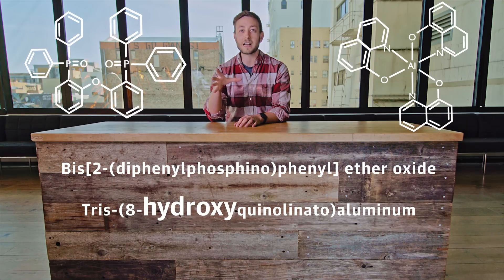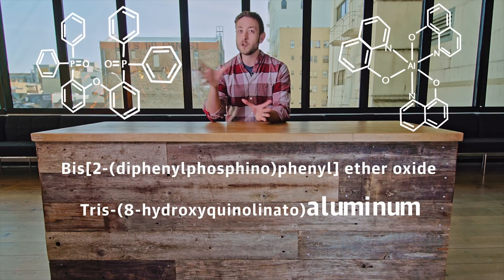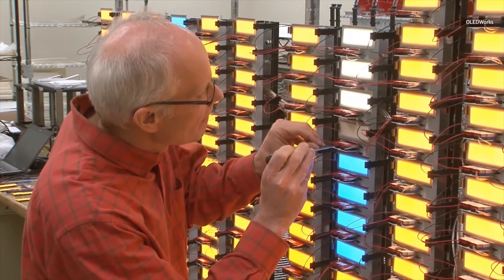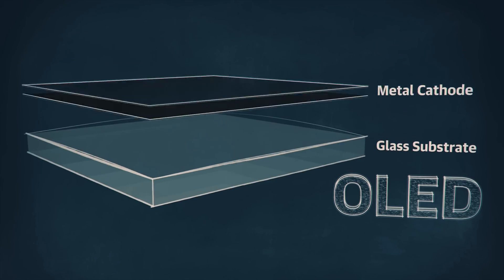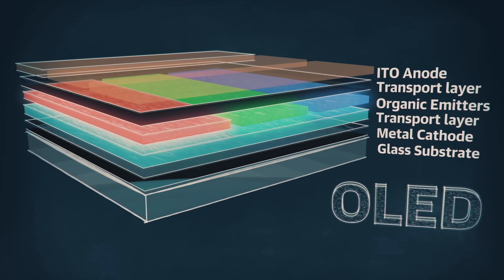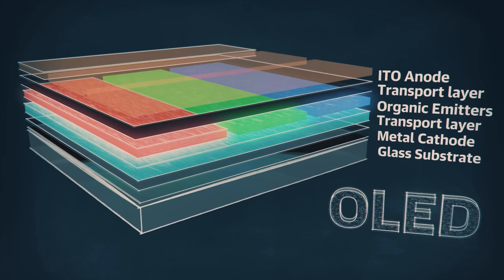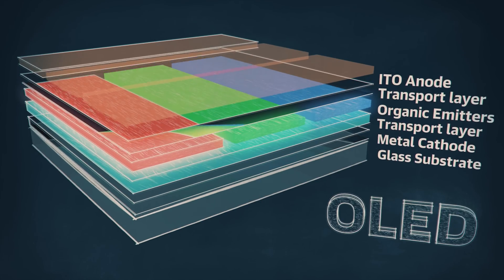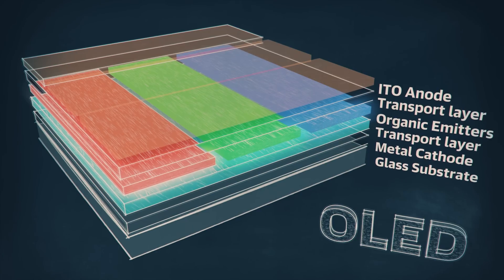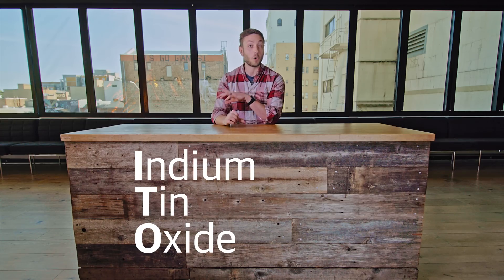And tris-8-hydroxyquinolinatoaluminum. These are essentially electro-luminescent dyes — run a charge through them and they glow. Beyond these color-generating compounds, which are called the hosts, an OLED is sandwiched between layers that help transport electrons and an anode and a cathode, the terminals which the electricity flows through. The anode is sometimes on the top surface and needs to be transparent so light from the OLED can pass through it, and indium tin oxide, or ITO, is the most common choice.